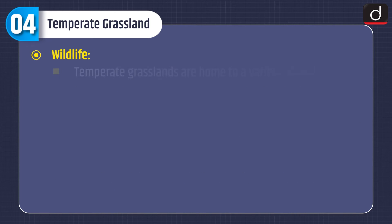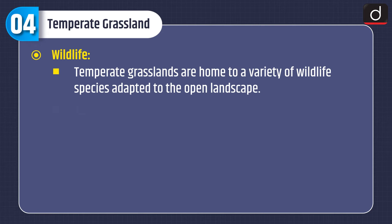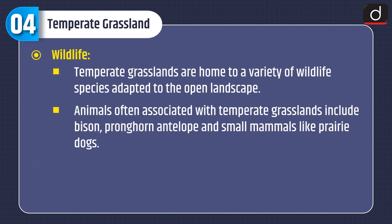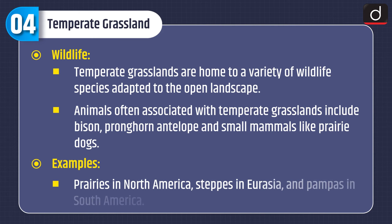Wildlife: temperate grasslands are home to a variety of wildlife species adapted to the open landscape. Animals often associated with temperate grasslands include bison, pronghorn, antelope and small mammals like prairie dogs. Examples are prairies in North America, steppes in Eurasia and Pampas in South America.